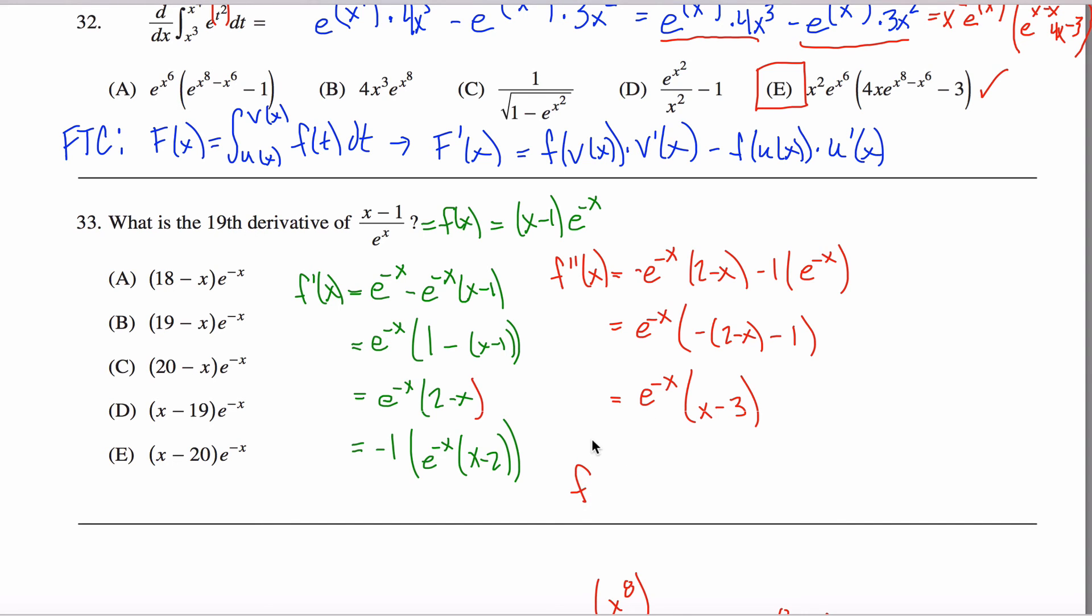The 19th derivative of x. Well, it's odd, so I'm going to have that negative 1. And then I'm going to have an e to the negative x because I always have an e to the negative x in these guys. And let's see, in the first derivative is x minus 2, in the second derivative is x minus 3, in the 19th derivative, I'm feeling like x minus 20 is probably what's going to end up happening. So, I get this.